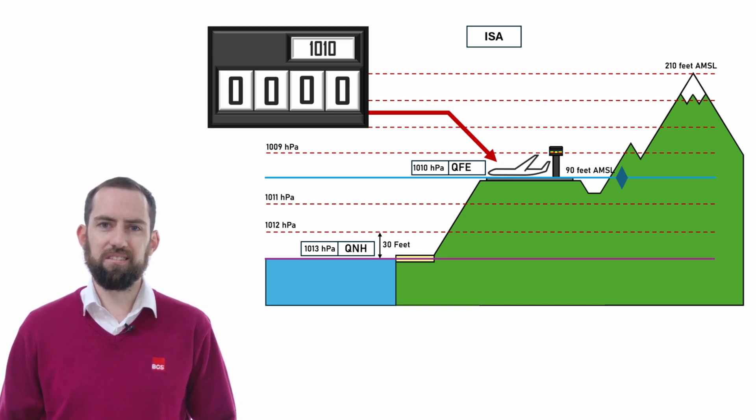Our altimeter is then going to make comparisons between the pressure level that you want it to read zero at and the pressure that it is detecting. In this case, if I told the altimeter to read zero at the 1010 pressure level, and the ambient pressure was 1010, it would tell me there's no difference. So it would read zero.